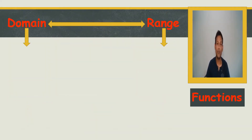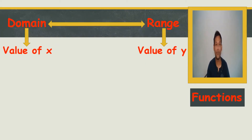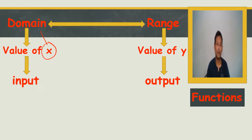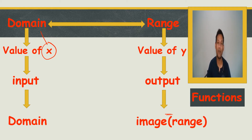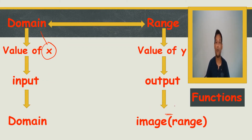Domain and range are parts of functions. The value of x is called the domain, and y is called the range. Some teachers use 'input' for x and 'output' for y, but the best terms are domain for x and image or range for y. When I say domain in a function, I mean the value of x; when I say image or range, I mean the value of y.